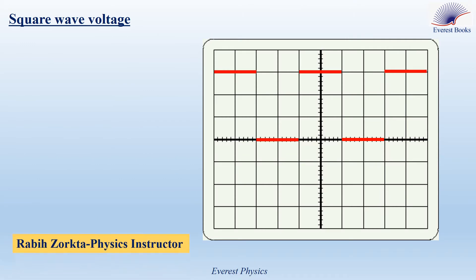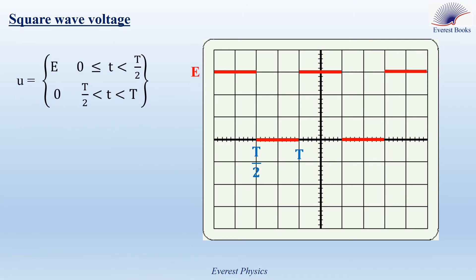The figure shows a square wave voltage on the screen of the oscilloscope, so that during the first half of each period the voltage is equal to a constant value E, and during the second half of each period the voltage is equal to 0. E is given by this formula: E is equal to Sv times y, where Sv is the vertical sensitivity or the amplitude gain of the oscilloscope, and y is the number of the vertical divisions measured over one cycle.